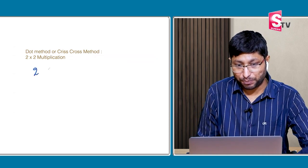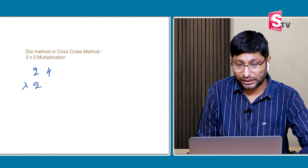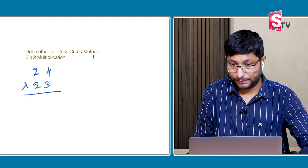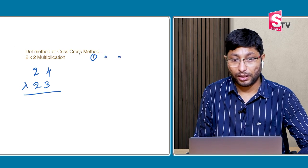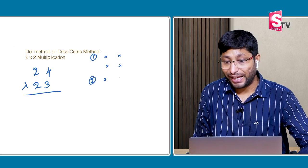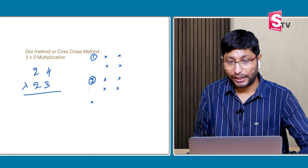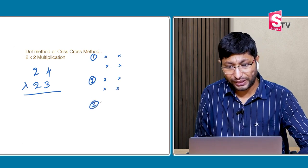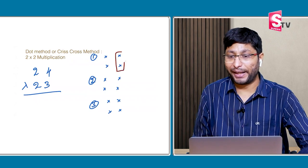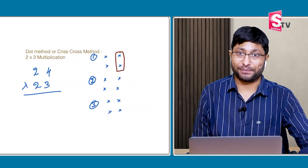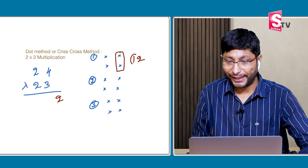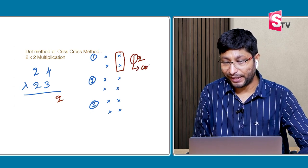I will start explaining with small numbers: 24 multiplied with 23. There are three steps in this dot method. Step 1: multiply units place into units place — 4 into 3 is 12. Write down the 2, and 1 will be carry.